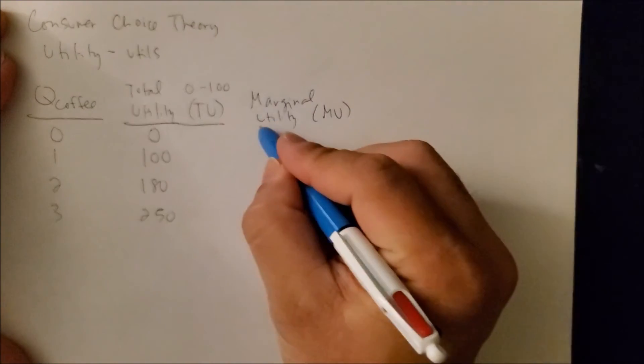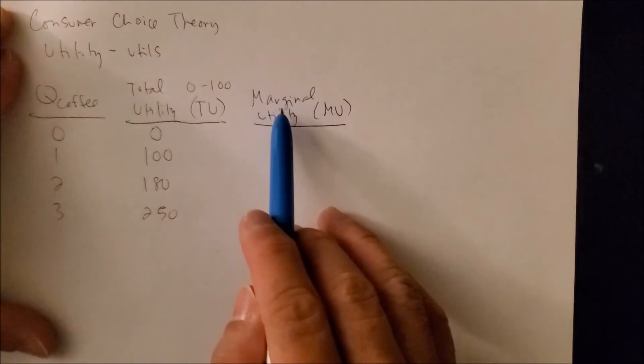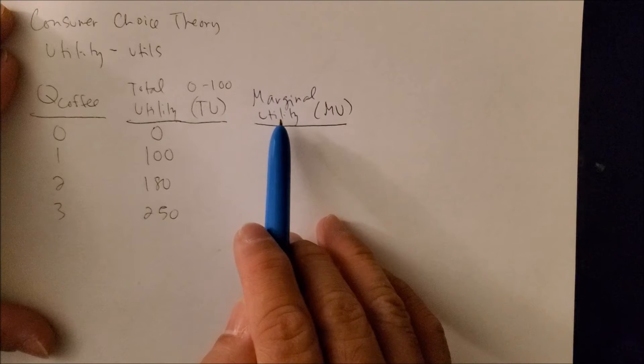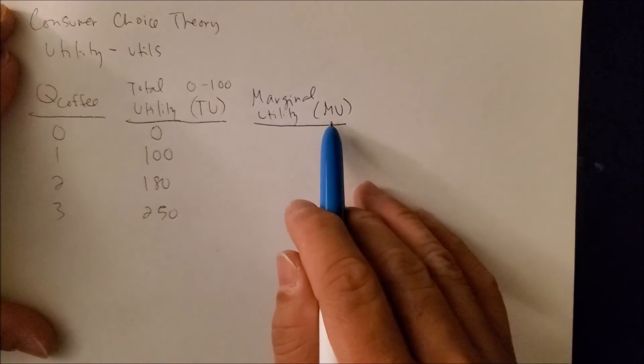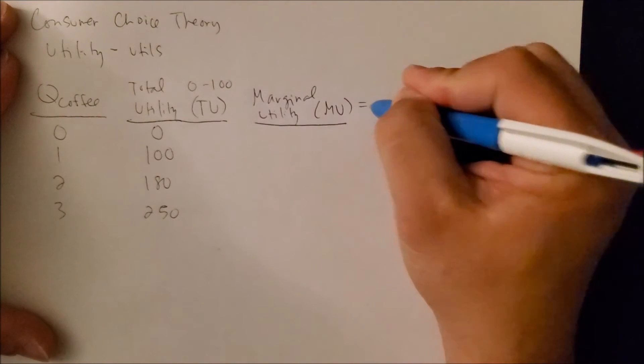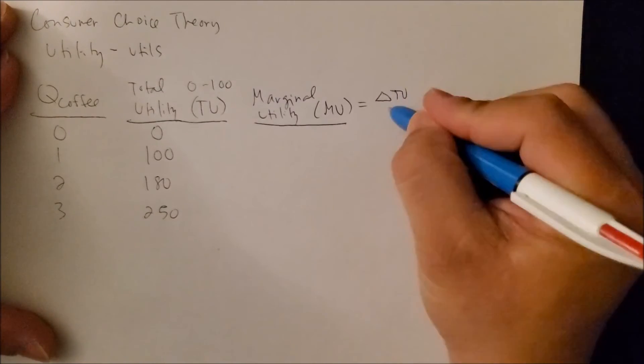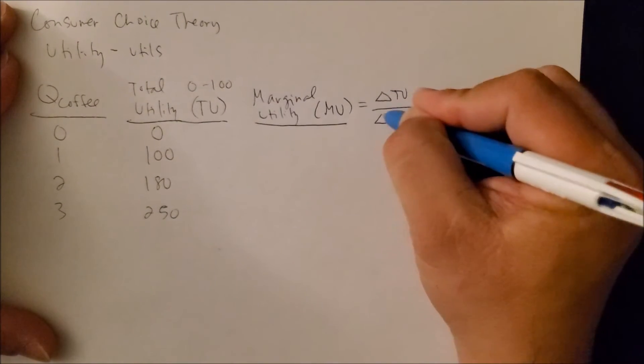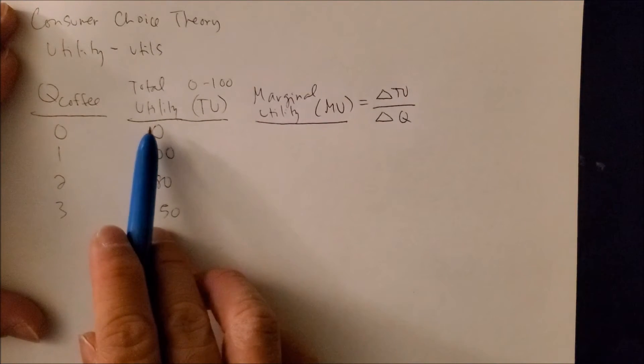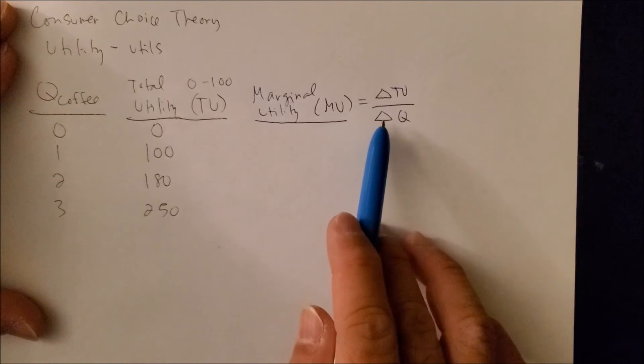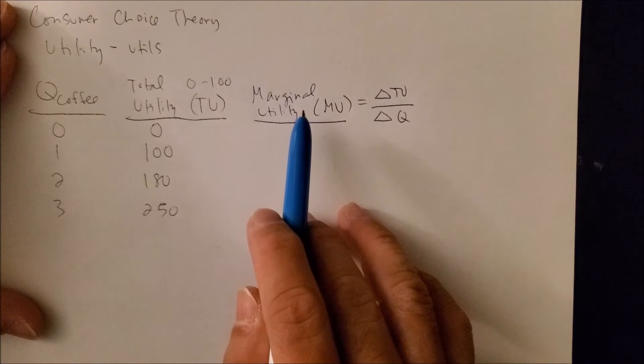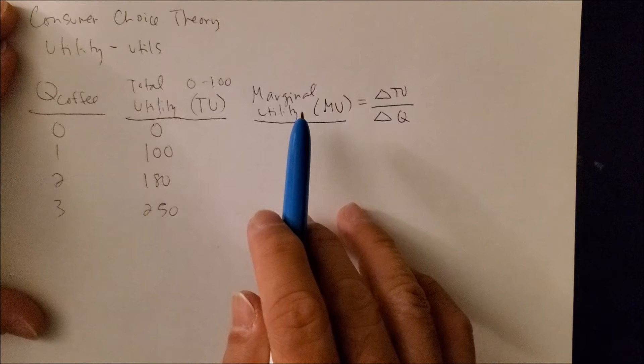The marginal utility, and we will denote this as MU, and the keyword here is marginal meaning one more, right, one more of something, utils, satisfaction. Here we have the MU which can then be derived into an equation which will give us the delta or change in TU over the change in quantity. This is why it's key to have both quantity and TU, because both are needed to find the MU. So what this says is what is your satisfaction when you consume one more coffee, one more donut, one more of something.